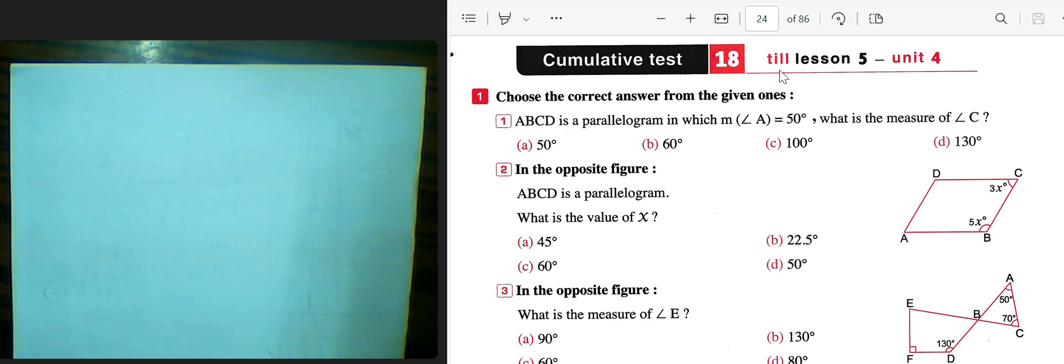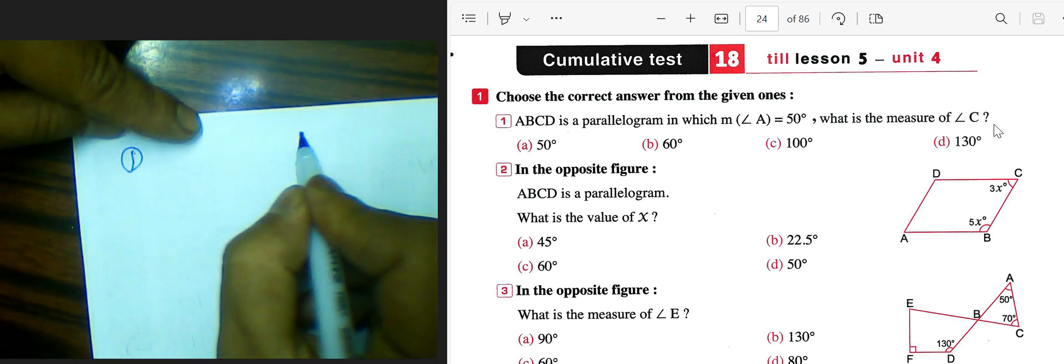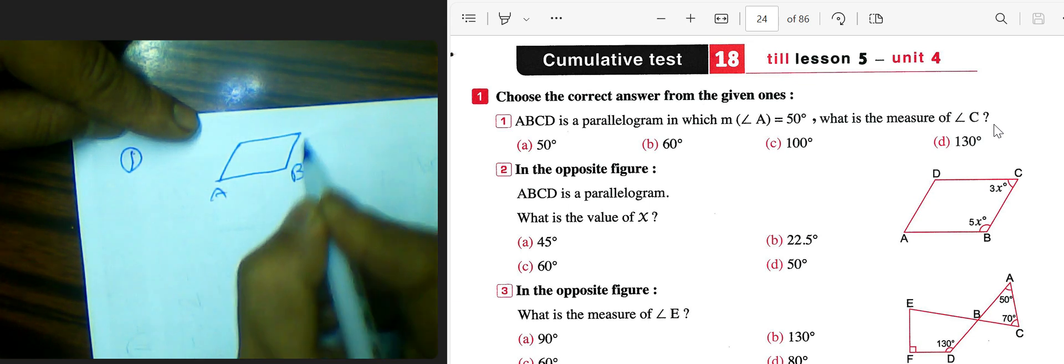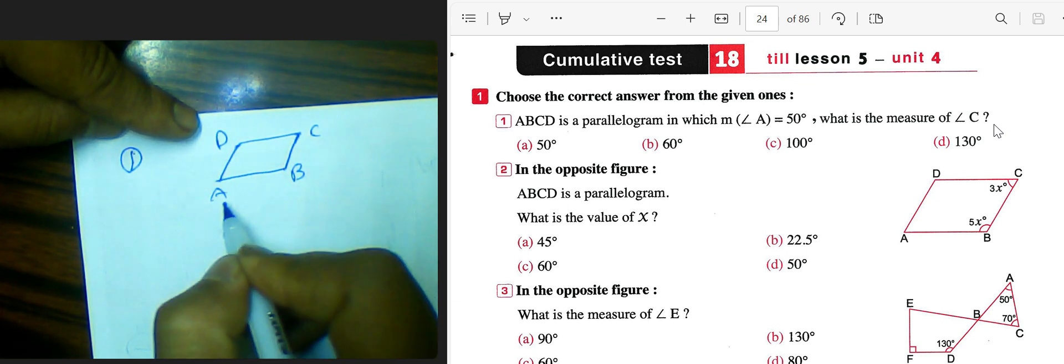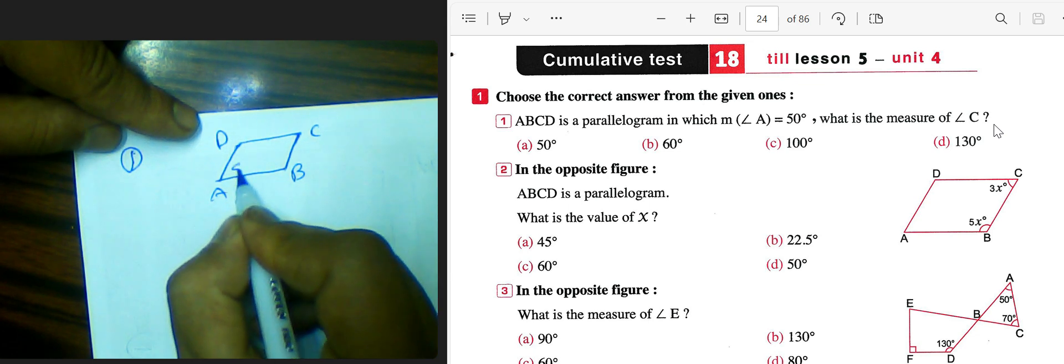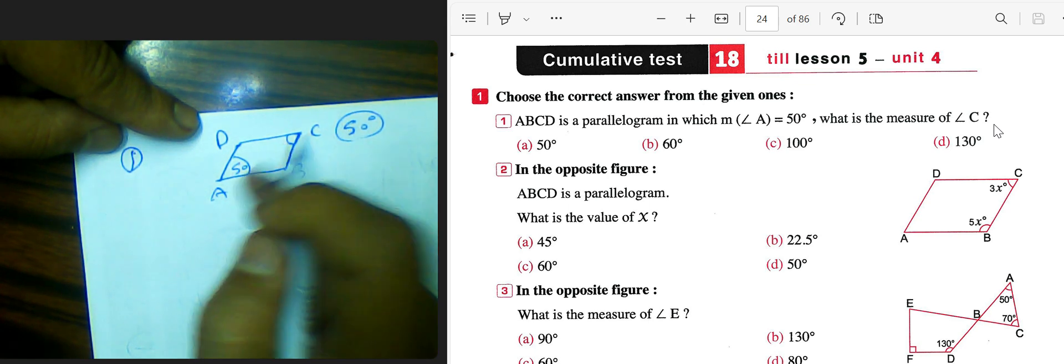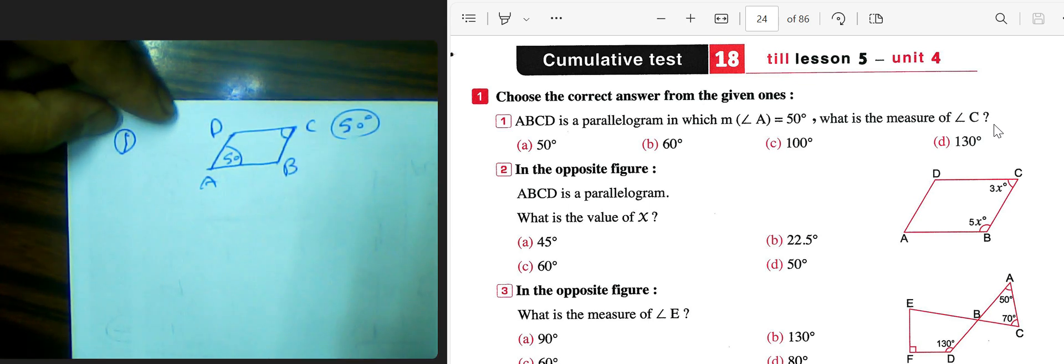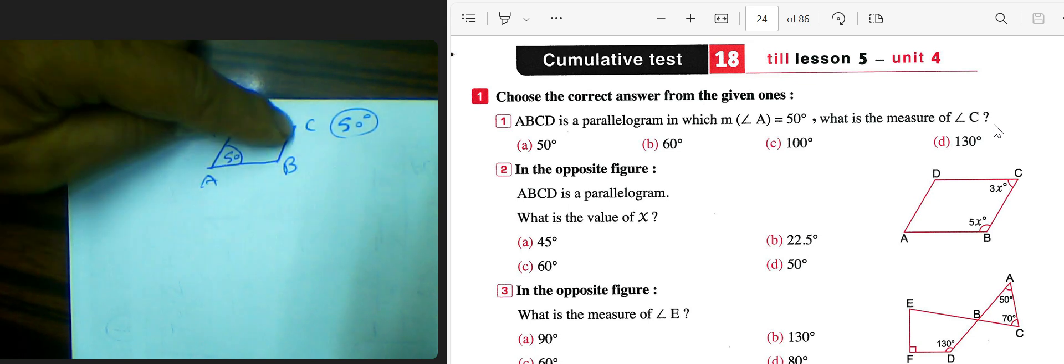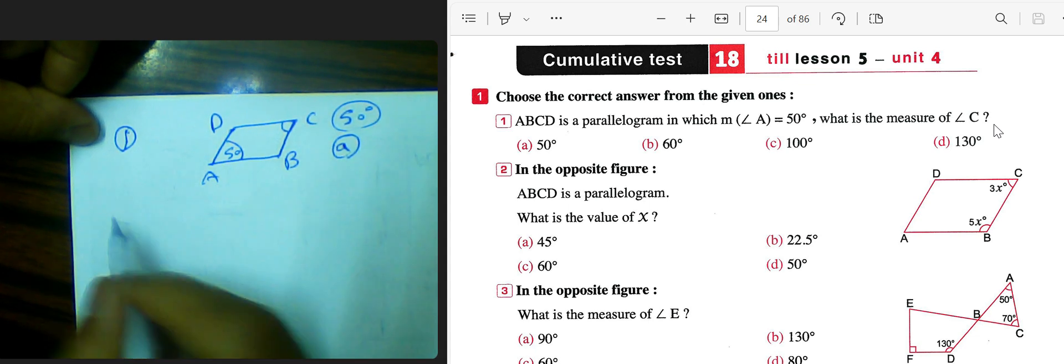Cumulative test number 18, lesson 5, unit 4. Number one, choose the correct answer from the given options. EBCT is a parallelogram in which measure of angle A was 50 degrees. What is the measure of C? We have parallelogram such that this figure EBCT, they give us measure of angle E was 50 degrees and they want measure of angle C. It will be 50 degrees, equal as a result, because each of these angles are equal in measure. The measure of angle C will be 50 degrees. Choose letter E for question number one.